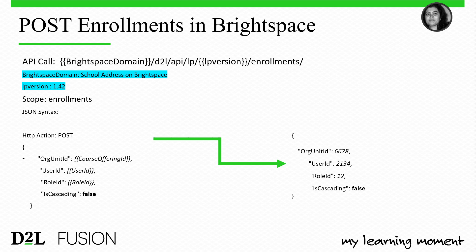Here is how to POST enrollments in Brightspace. The API call syntax starts with your Brightspace domain URL, followed by /d2l/api/lp/1.42/enrollments/. The JSON body uses POST action with three key variables: OrgUnitId, UserId, and RoleId. The IsCascading boolean is set to false for this enroll action.